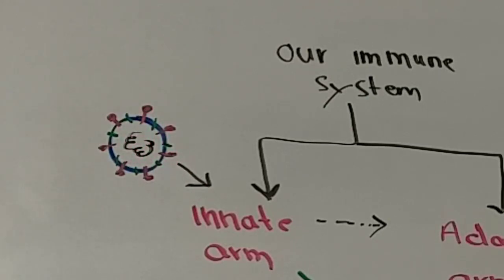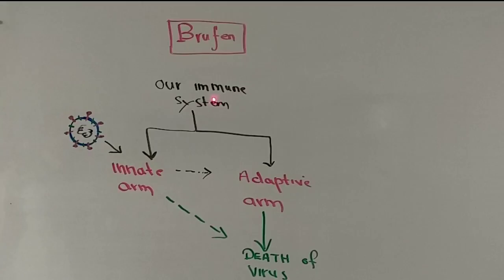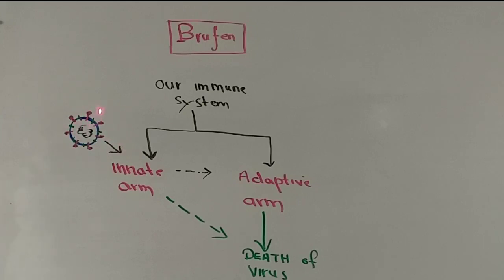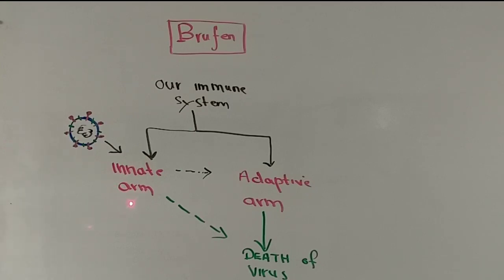In the lipid bilayer there are two other proteins: the E-protein or envelope protein, and M-protein or membrane protein. Our immune system comprises basically two limbs — one is the innate arm, which is present from birth, and one is the adaptive or acquired arm, which takes around a week to develop against the virus. Whenever the coronavirus enters our body, our immune system readily attacks the virus.